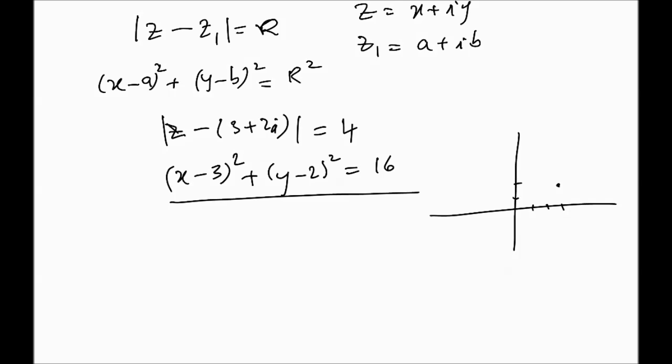So it's this circle, and there's your radius of 4, the square root of 16, and its center is 3 plus 2i. That would be your argon diagram corresponding to this particular situation.